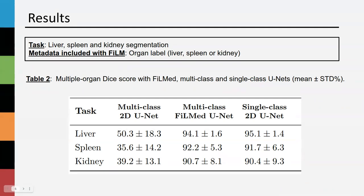Here are the results for multi-organ segmentation. The first column presents results from a regular training on the dataset with missing labels. The Dice scores illustrate the hampered learning caused by those missing labels. When inputting organ type, we reach similar results to training one model per class — meaning three different models — compared to a single model with FiLM. These results are presented in the second and third columns of the table. Using FiLM enabled a robust method to train a multi-class model with missing labels.